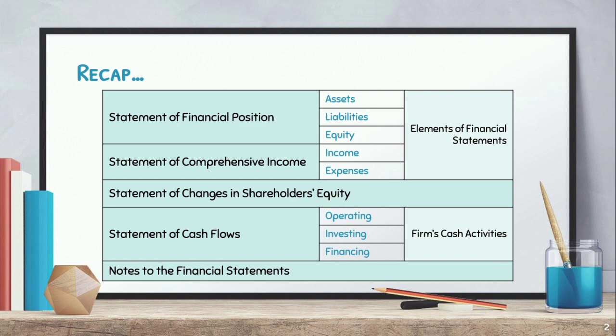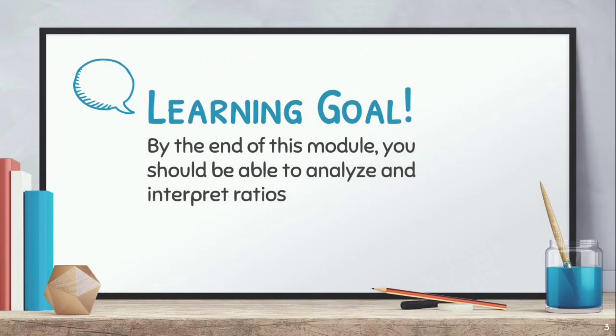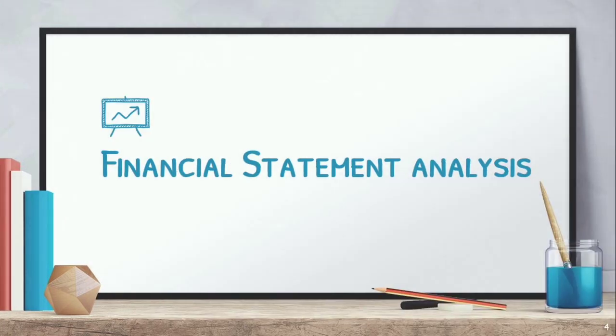For this week, our lesson will be about the analysis of financial statements using horizontal and vertical analysis. Our learning goal is that by the end of this module, you should be able to analyze and interpret trend ratios. Financial statement analysis involves careful selection of data to assess and evaluate the firm's performance during the period, in comparison to previous periods, its present condition, and future business potentials.